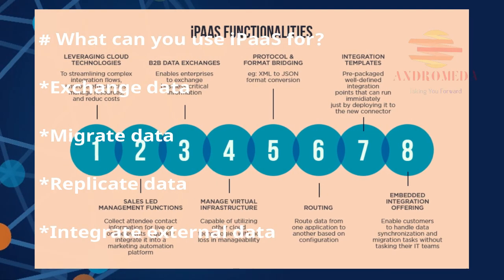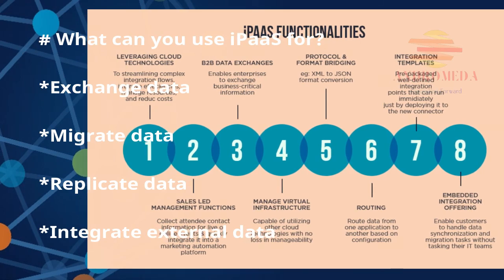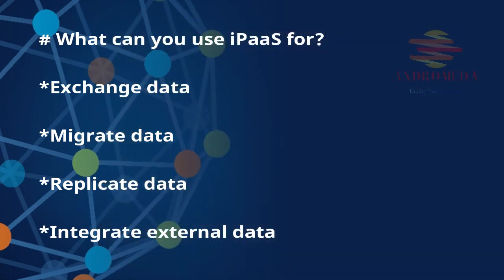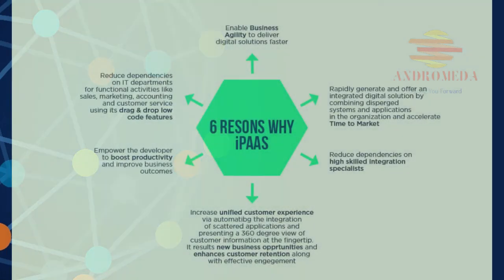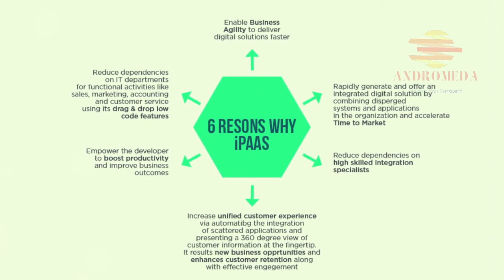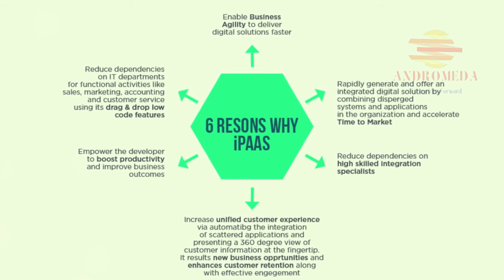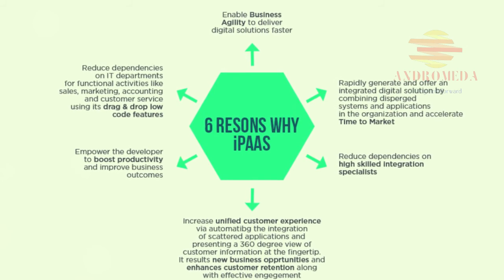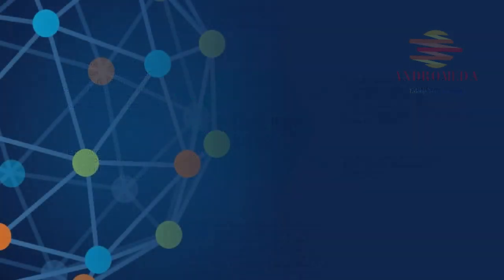Second, migrate data from legacy applications to modern cloud-based business systems to make your business more agile. For example, you can map, transform, and move data from an older business system such as Microsoft Dynamics CRM on-premises to a cloud CRM like Salesforce. iPaaS can help you migrate data such as accounts, contacts, and opportunities in the correct order to preserve relationships between the data in the new system.